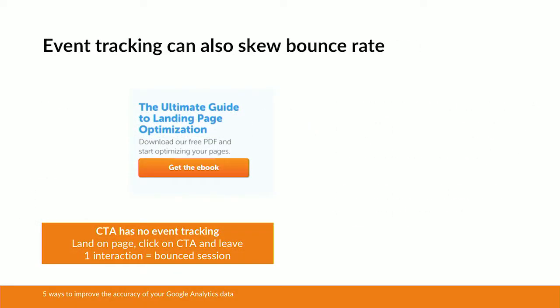It's not only tracking code that has an impact on bounce rate — event tracking can also skew your bounce rate. Take this very simple example of a landing page with a single call to action to download an ebook. Assume this landing page has standard Google Analytics page tracking code on it, but the button has no event tracking whatsoever. In the user journey where somebody lands on this page, clicks the call to action to download the ebook, and then leaves the site, that user would be classed as a bounce session because Google Analytics is only seeing one interaction: the page view fired when you land on the page.